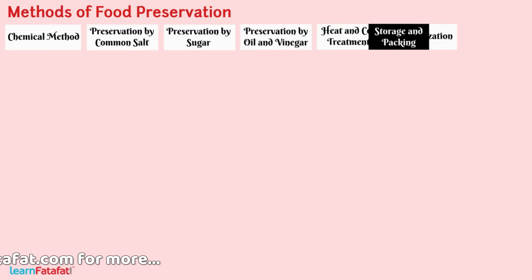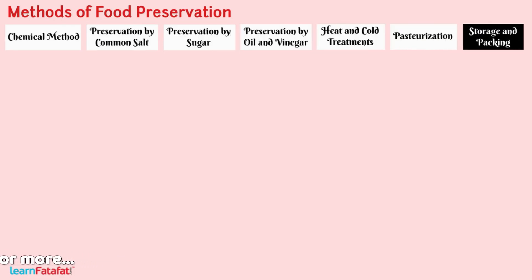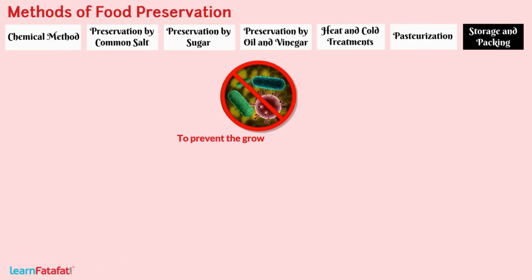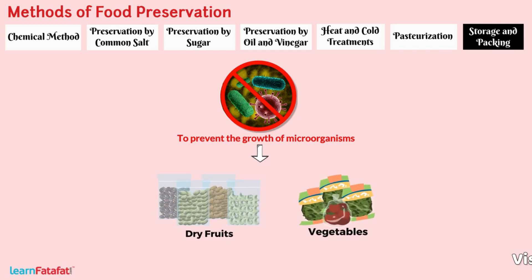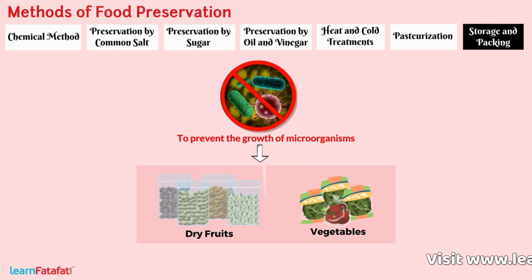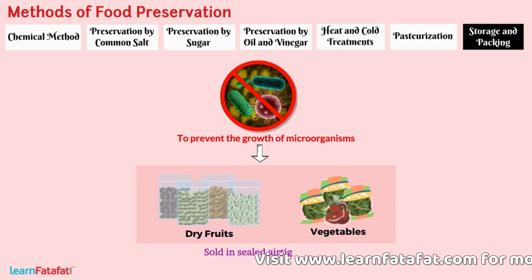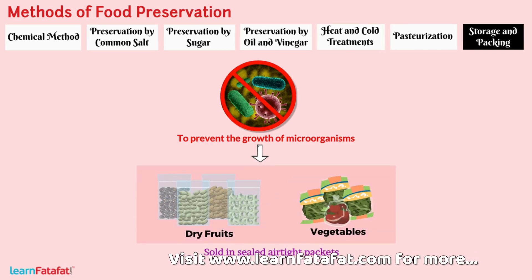Storage and packing. To prevent the growth of microorganisms, dry fruits and vegetables are sold in sealed airtight packets.